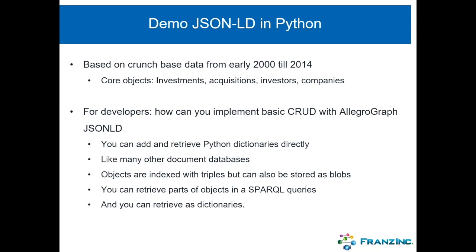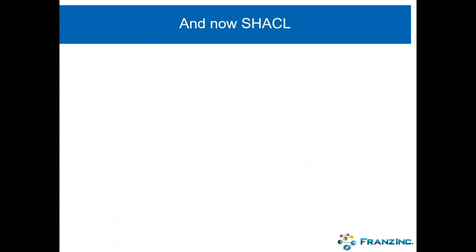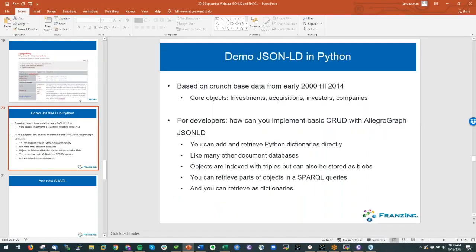Now let me go to the demo of JSON-LD in Python. The core of the demo is based on CrunchBase data from early 2000s to 2014, with core objects like investments, acquisitions, investors, and companies. Today is not so much about teaching JSON-LD but showing developers how to implement basic CRUD with AllegroGraph and JSON-LD — how to add and retrieve Python dictionaries directly, just like in other document databases.